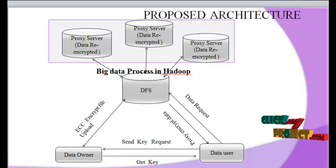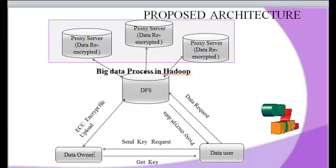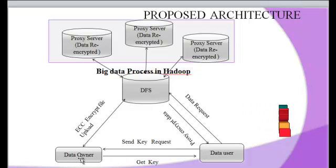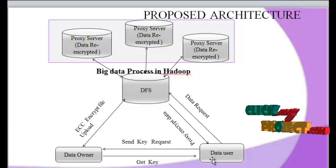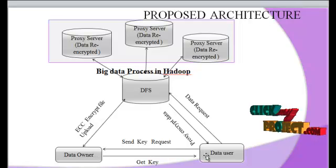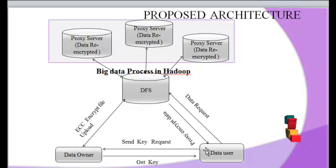The data user first records with the data owner and receives keys from the data owner. Data uploading and downloading is managed by the data owner. If the user is authenticated, the data owner sends a secret key to each user. This key is used alongside data files that users send to the data owner.